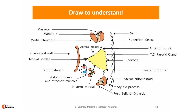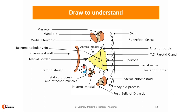It is up to you, students, to further draw by adding the contents. Here you are seeing the facial nerve entering into the gland, passing through it and emerging outwards. Deep to that lies your retromandibular vein. Deep to that lies your external carotid artery. Colour them up and complete the diagram.